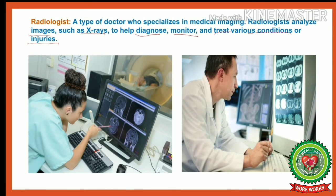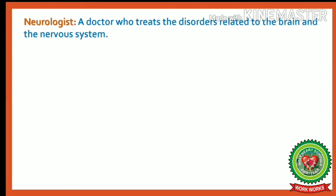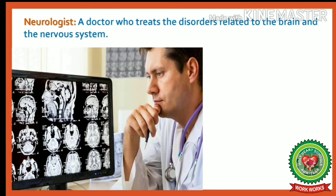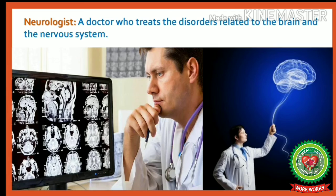If a person has a problem related to nerves, whom should he visit? He will visit a neurologist. A neurologist is a doctor who treats the disorders related to the brain and nervous system.